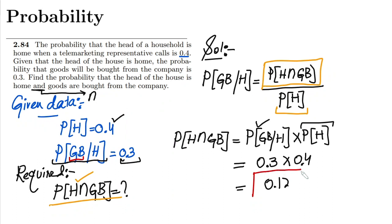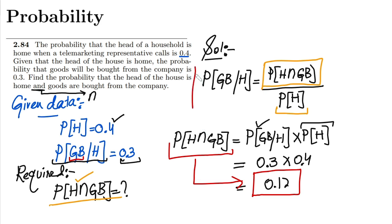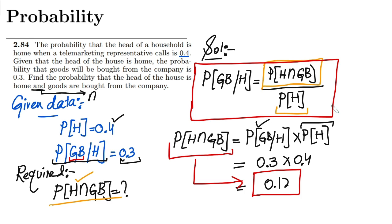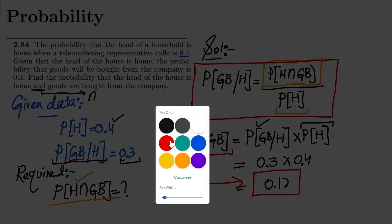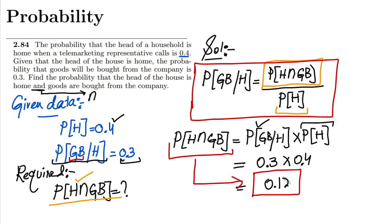So that is it for today. We have found the probability by using the conditional probability formula, and this is one of its applications. I will see you with some more interesting stuff in our upcoming video. See you soon.